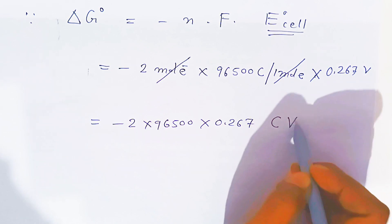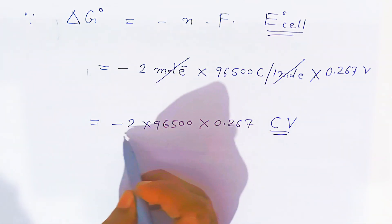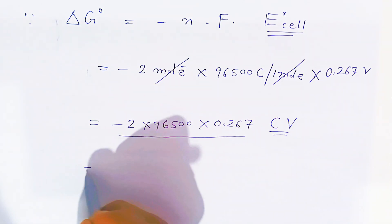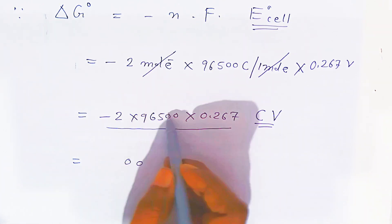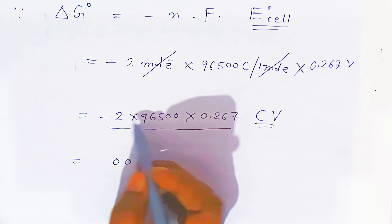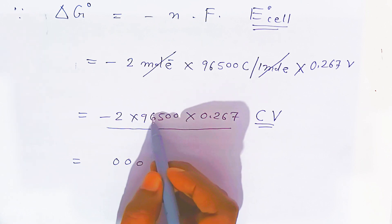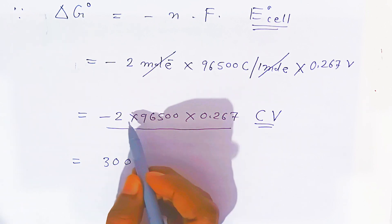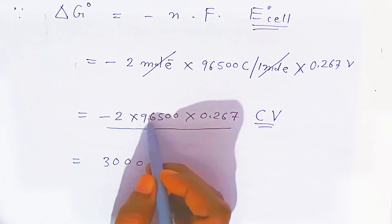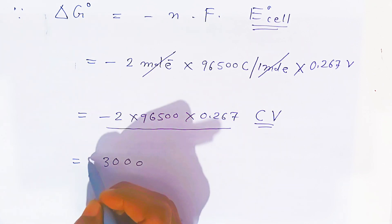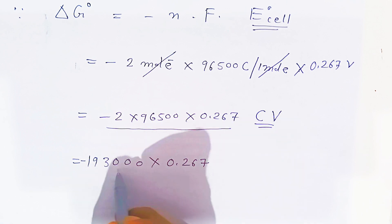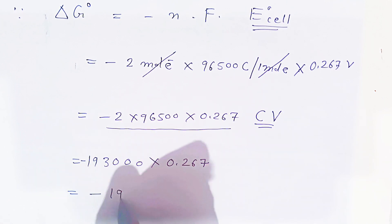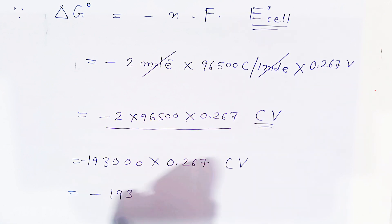To multiply, we take 2 times 96500 first, giving 193000, then multiply by 0.267. Removing the decimal, this becomes 193 times 267 in coulomb-volts. We consider y equals 193 times 267 and use the log table to evaluate this three-digit multiplication.